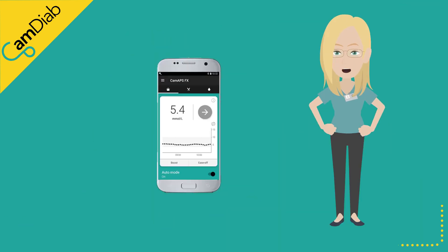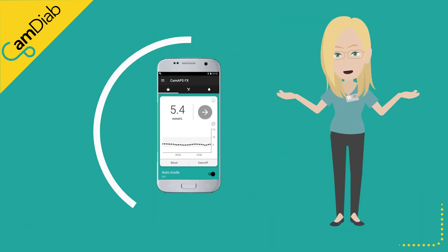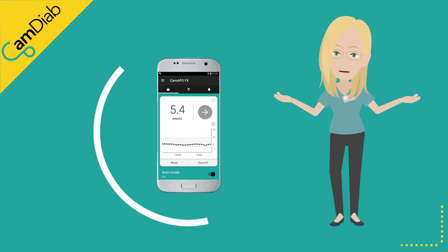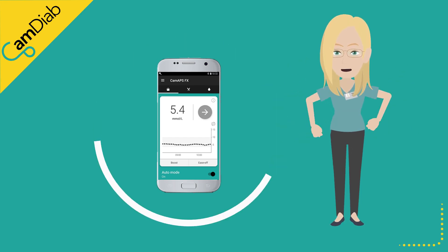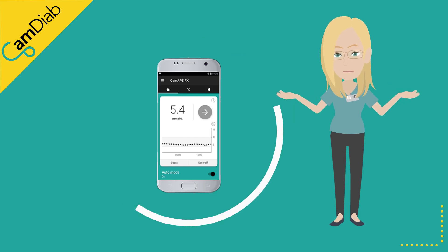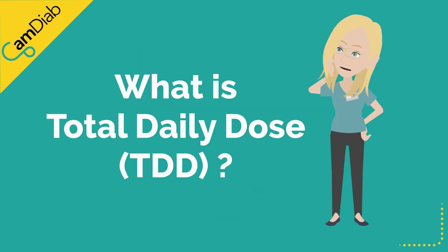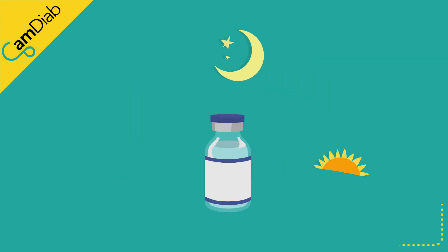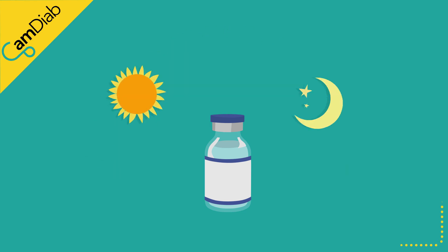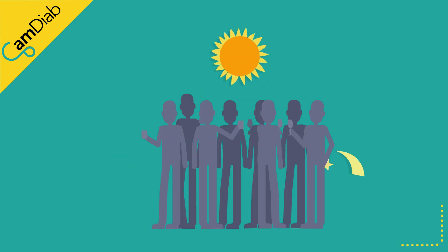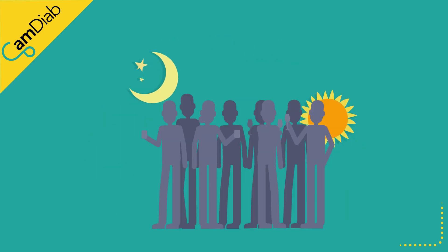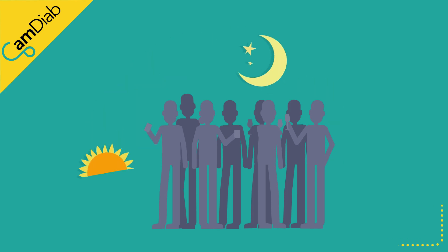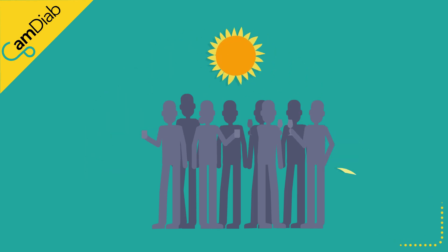Can-APS-FX uses your total daily dose as one of the factors it takes into account in order to calculate how much insulin to deliver. So what is your total daily dose of insulin — often abbreviated to TDD? It is all the insulin you generally require in a 24-hour period: the insulin you need for your meals and snacks, as well as your body's background, or so-called basal, insulin requirements.